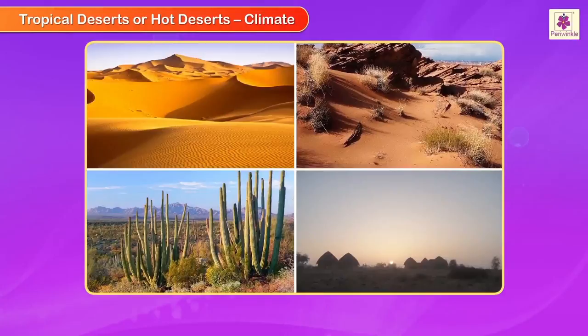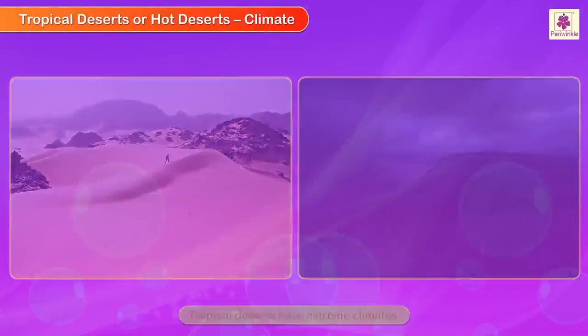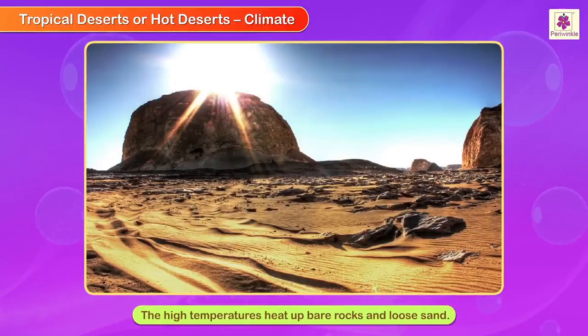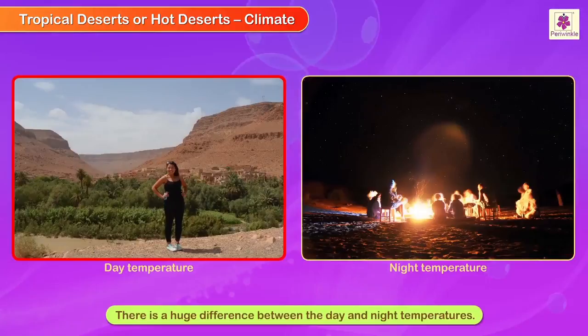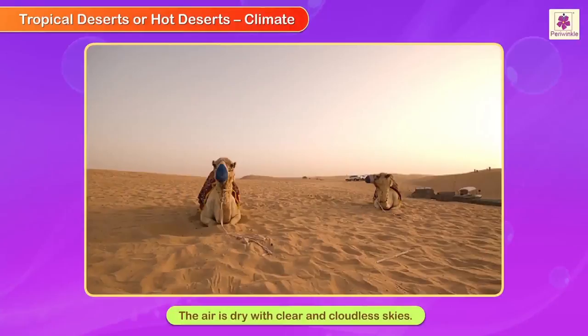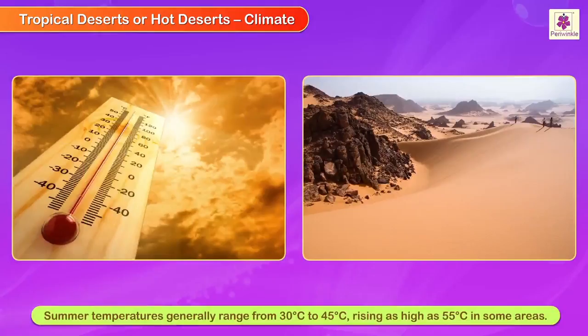Climate: Tropical deserts have extreme temperatures. The high temperatures heat up bare rocks and loose sand. Usually, there is a huge difference between the day and night temperatures. Additionally, the air is dry with clear and cloudless skies.